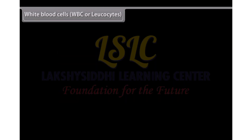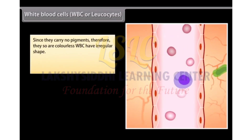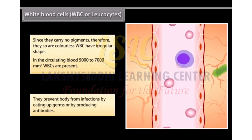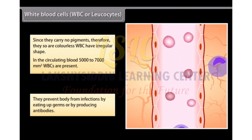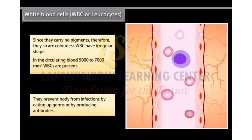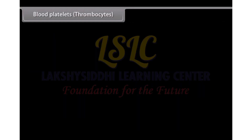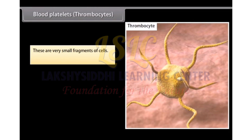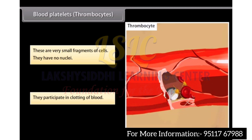White blood cells, WBC or leukocytes, carry no pigments and therefore are colorless. WBCs have irregular shape. In the circulating blood, 5,000 to 7,000 per mm cube WBCs are present. They prevent the body from infections by eating up germs or by producing antibodies. Blood platelets, or thrombocytes, are very small fragments of cells with no nuclei. They participate in clotting of blood.